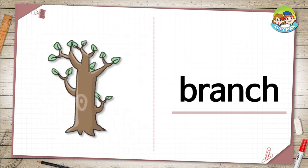Branch. This is a tree. The large part of it is the trunk. The trunk is thick. The small parts are branches. The branches are from the trunk. Leaves grow on the branches.